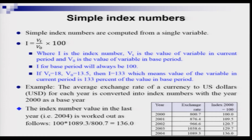For example, if Vt equals 18 and V₀ equals 13.5, the index number value is 133. That means the value of the variable in the current period is 133 percent of the value in the base period. Now let us show an example through some numbers.